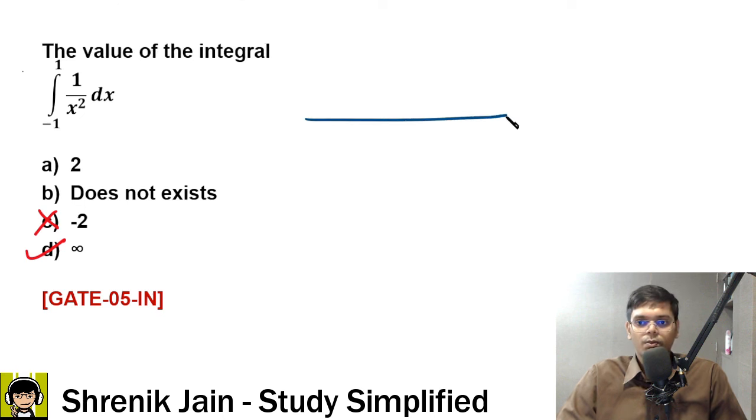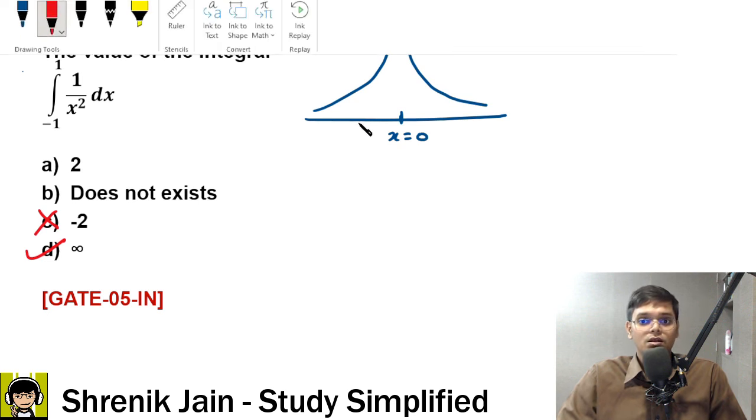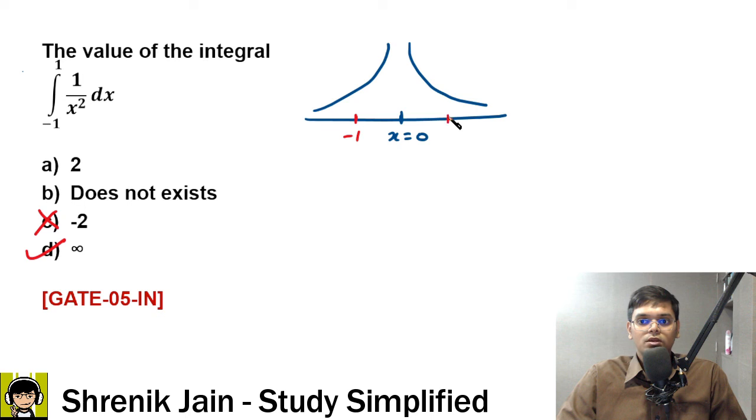We have to say that 1 upon x squared looks like this, which means at x equals 0 the function is not defined. And you need the integration from minus 1 to 1.